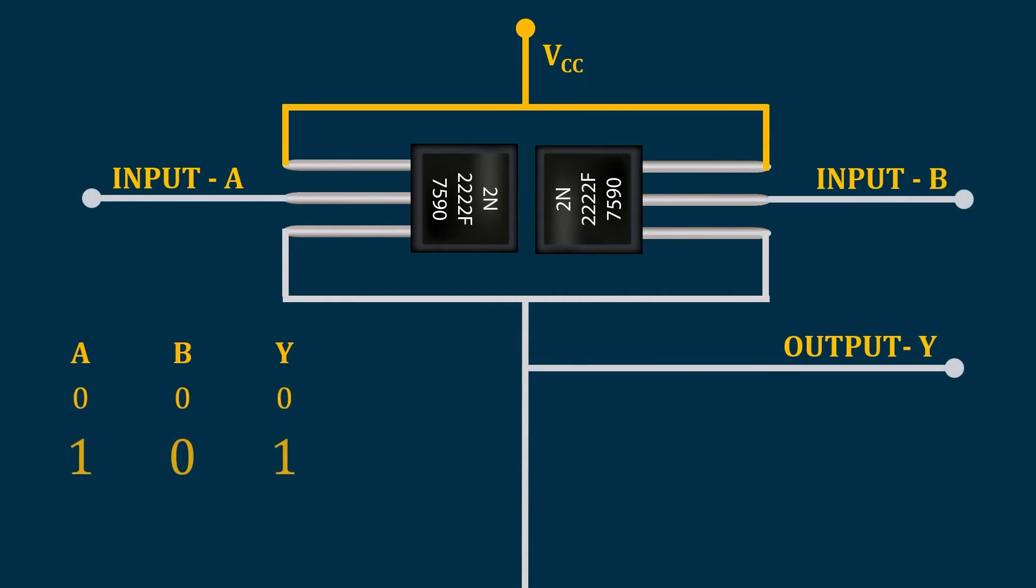But now instead of both inputs being 0, what happens when B is 0 and A is 1? When A is 1, this transistor gets turned on and because of this we get the VCC in the output. That is why we have 1 in the output.